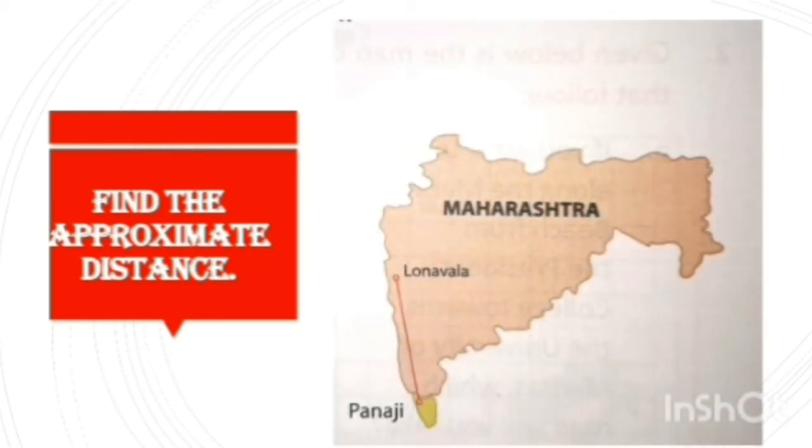Next, find the approximate distance. In this map, we are going to find the distance between Panaji and Lonavala. The distance is given as 2.5 cm and the scale is given as 1 cm is equal to 200 km.